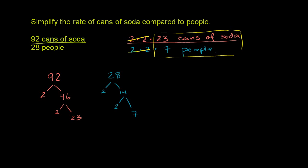Or 7 people for every 23 cans of soda. And we're done. We've simplified the rate of cans, or the ratio of cans of soda compared to people.